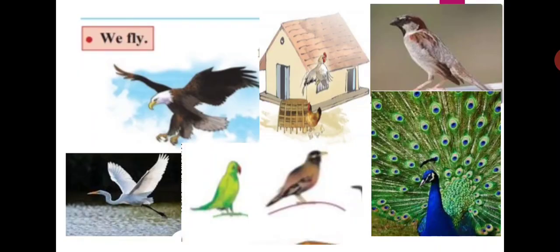We fly. We all know that birds can fly — they have two wings to fly with, and their body is covered with feathers. There are differences in the flying ability of different birds. The eagle can soar high into the sky and stay in the air for a long time, but the cock and peacock do not fly high and come down soon.